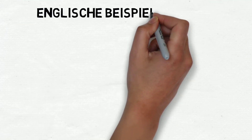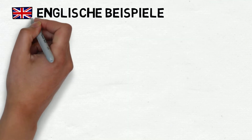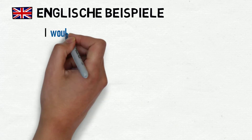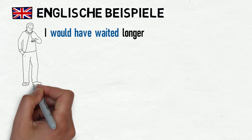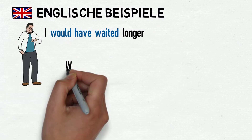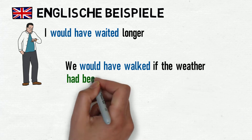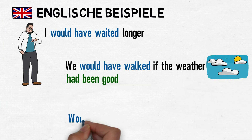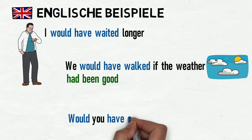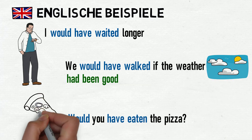Let's look at some examples in English. I would have waited longer. We would have walked if the weather had been good. Would you have eaten the pizza?